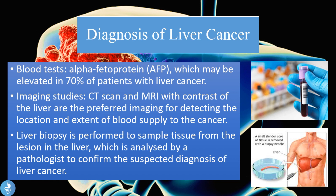For the diagnosis of liver cancer, blood tests can help us. The levels of alpha-fetoprotein, which is a specific marker for liver cancer, may be elevated in at least 70% of patients with liver cancer. We can also use imaging studies such as a CT or MRI scan with contrast of the liver, which are the preferred techniques for detecting the location and extent of blood supply to the cancer. A liver biopsy can also be performed, where a tissue sample from the lesion in the liver is analyzed by a pathologist to confirm the suspected diagnosis.